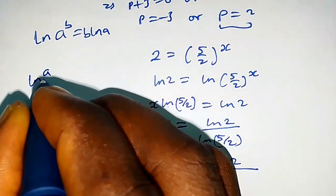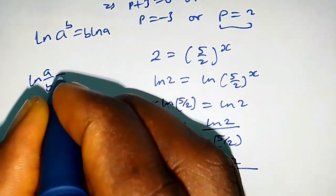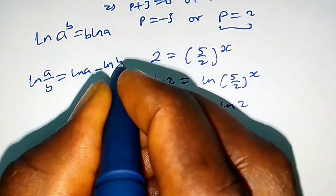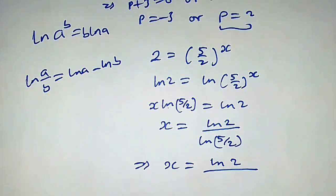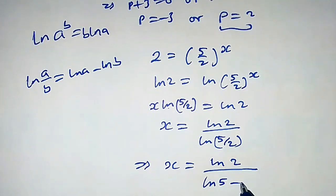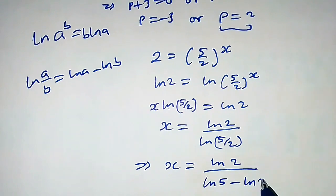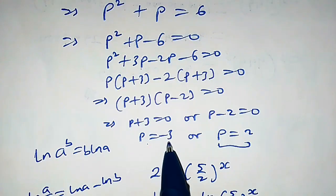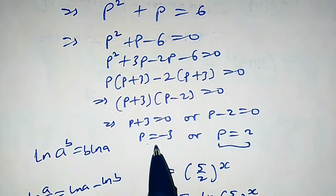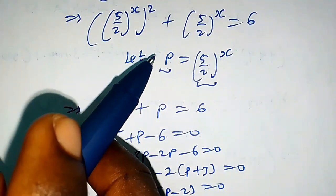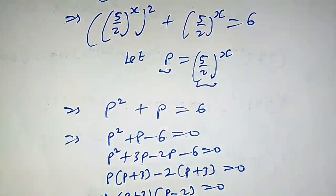Now, ln(a/b) can be written as ln a minus ln b. Applying this to the denominator, we get x equals ln 2 over (ln 5 minus ln 2), which is the required solution. We discard p equals negative 3 because it has no valid solution when substituted back.